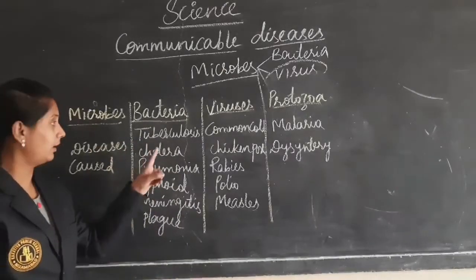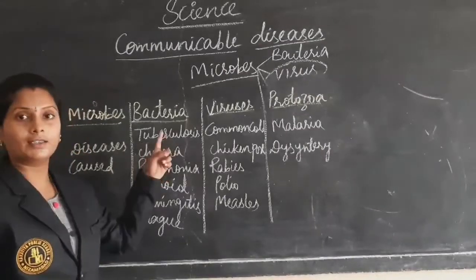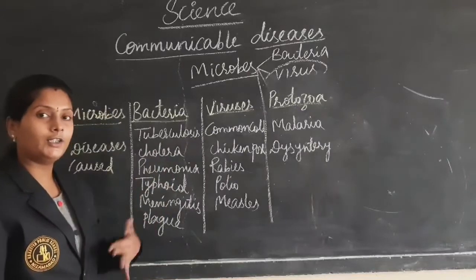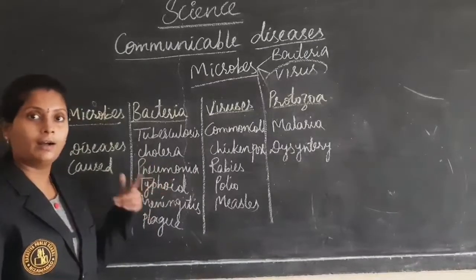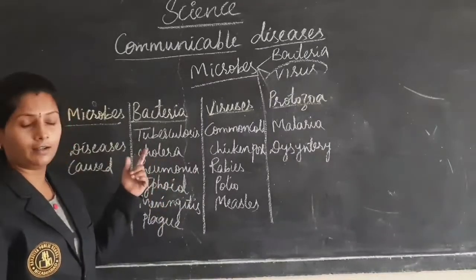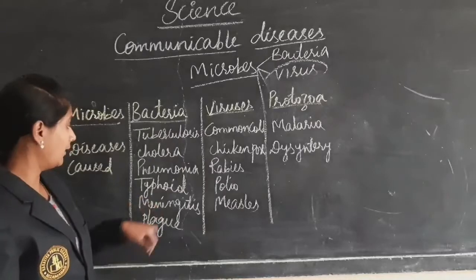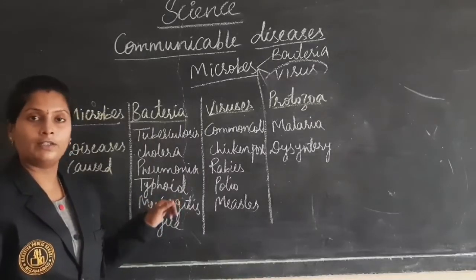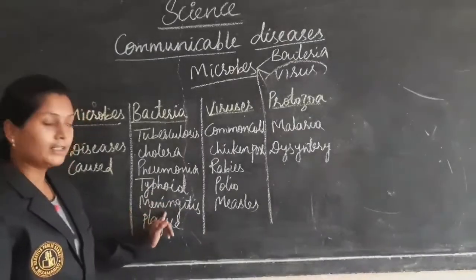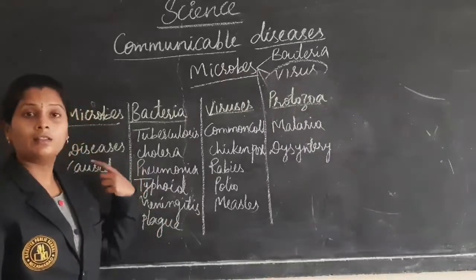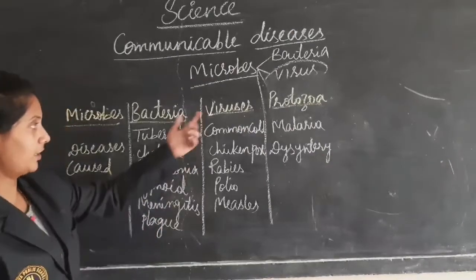Tuberculosis involves a continuous coughing — the symptom of this disease is nothing but continuous coughing. Cholera causes some respiratory problems. Pneumonia is affecting the lungs. Typhoid is like fever and headache. Meningitis affects the spinal cord. And plague is one kind of bacterial infection.